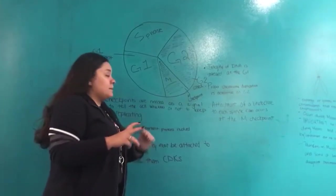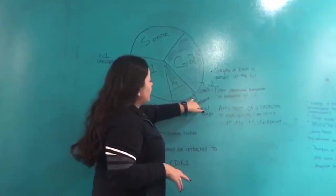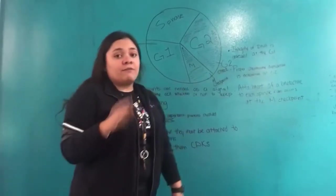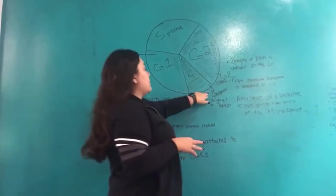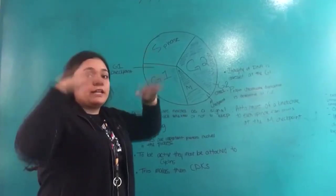One very important thing to keep in mind is that in order for it to get from G2 to M, the MPF is needed. MPF stands for mitotic promoting factor. Without this, the M checkpoint would not be able to occur. Also, MPF and cyclin always go hand in hand with each other.